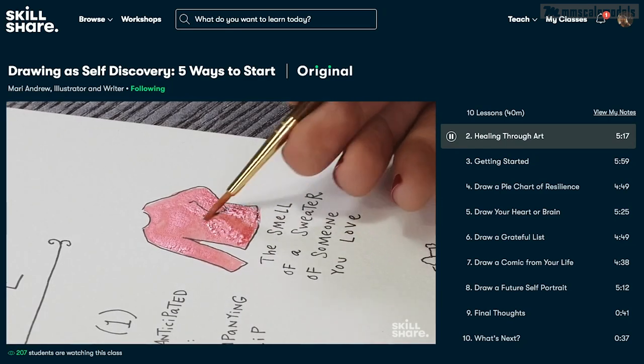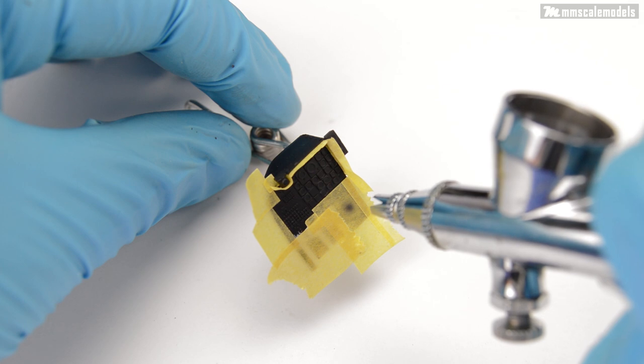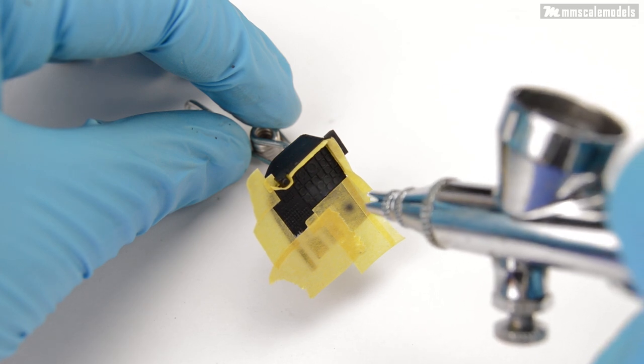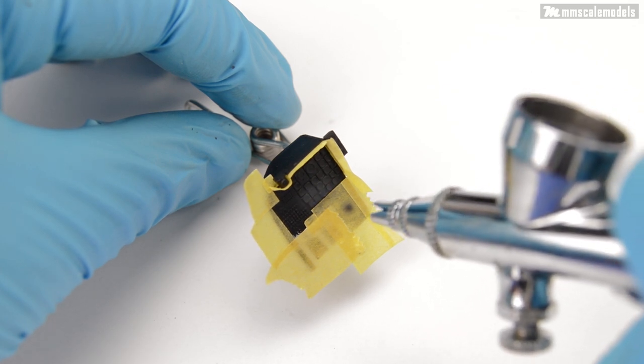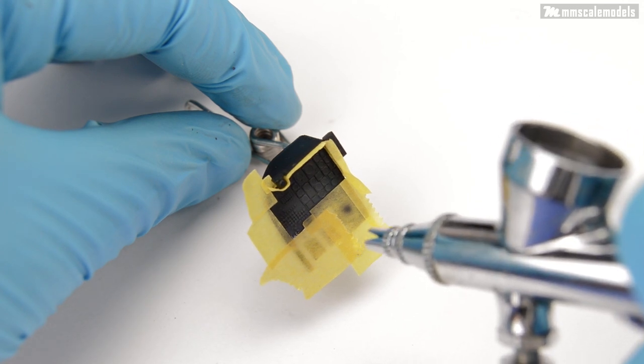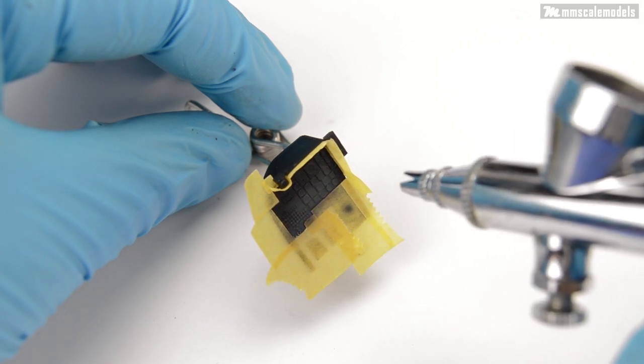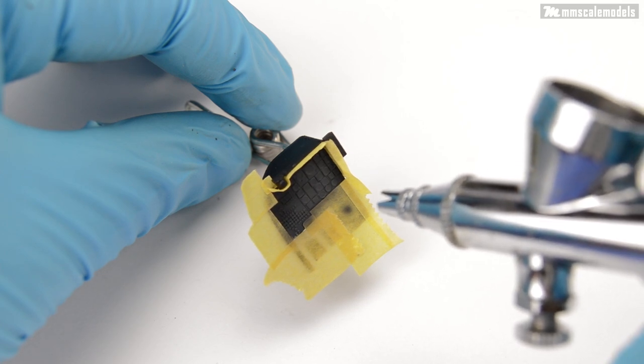Now let's get back to the tutorial. I am a firm believer in painting as much as possible with the airbrush. So after careful masking we can apply a coat of RLM66 on the higher layers of the instrument panel.